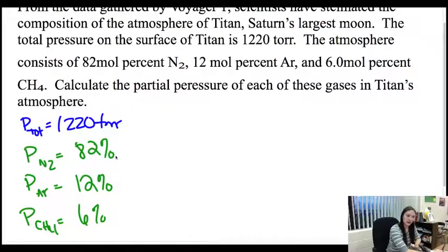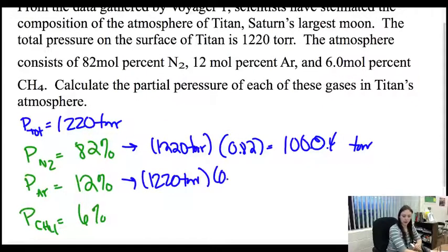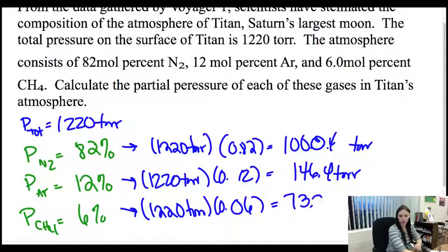All I do is I change this mole percent into something that I can use. When you multiply by a percentage, you always change it into a decimal. If I want to know what 50% of 10 is, I take 10 times 0.5. So I take my total pressure which is 1220 torr, and I take it times 0.82, and then I get 1000.4 torr. If I want the argon, I take 1220 torr times 0.12, which is going to be 146.4 torr. I look at the last one, I take 1220 torr and I take it times 0.06. This is going to give me 73.2 torr. So if I add all these up, I should get my 1220 torr.